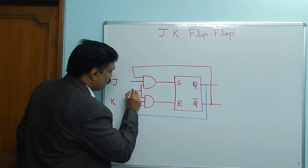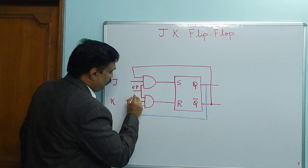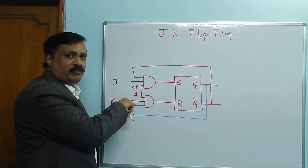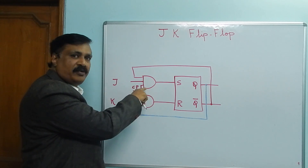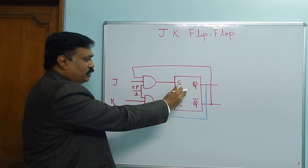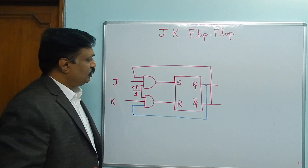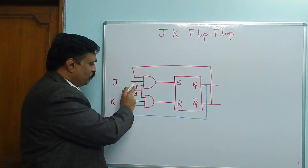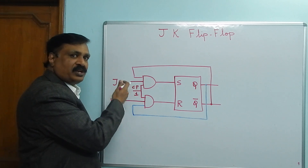Now the two feedback lines have been connected. The clock pulse is connected here. I always keep clock pulse as 1, because if it is 0, whatever input is given will not reach the gate and you cannot generate an output. Therefore I am keeping the clock pulse always as 1.